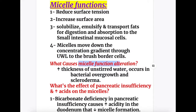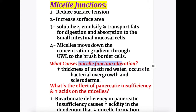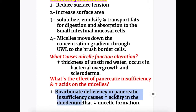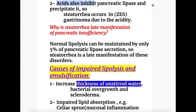What causes micelle function alteration? Increased thickness of the unstirred water layer, as occurs in bacterial overgrowth and in scleroderma, causes alteration in micelle function. What is the effect of pancreatic insufficiency and increased acid on micelles? Bicarbonate deficiency in pancreatic insufficiency causes increased acidity in the duodenum, which decreases micelle formation. Acid also inhibits pancreatic lipase and precipitates it, which can cause steatorrhea.